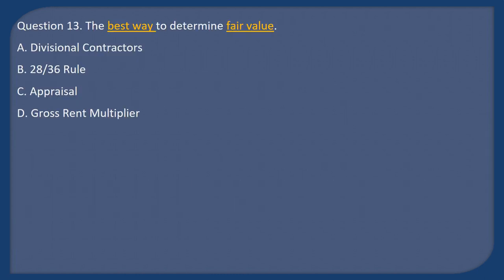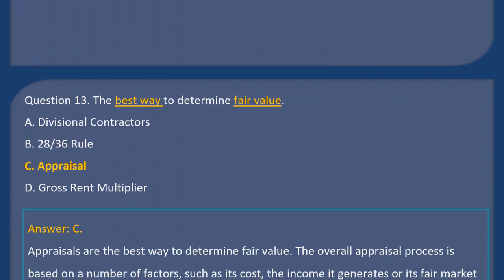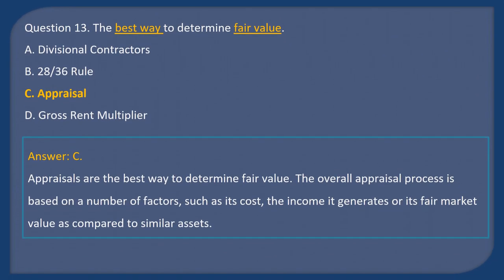Question 13: What is the best way to determine fair value? A) Divisional contractors, B) 28/36 rule, C) Appraisal, D) Gross rent multiplier. Answer: C. Appraisals are the best way to determine fair value. The overall appraisal process is based on a number of factors such as cost, the income it generates, or its fair market value as compared to similar assets.